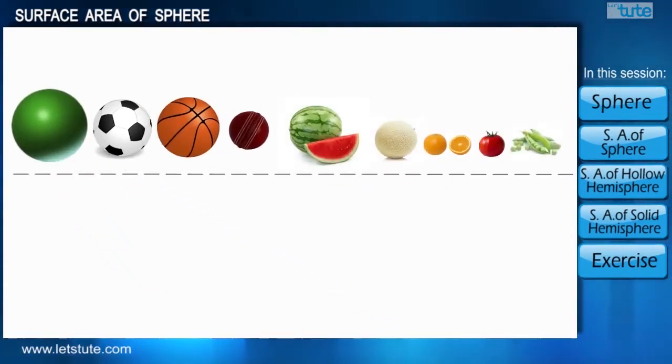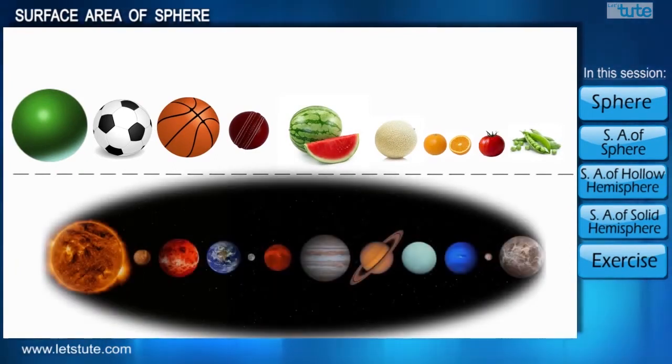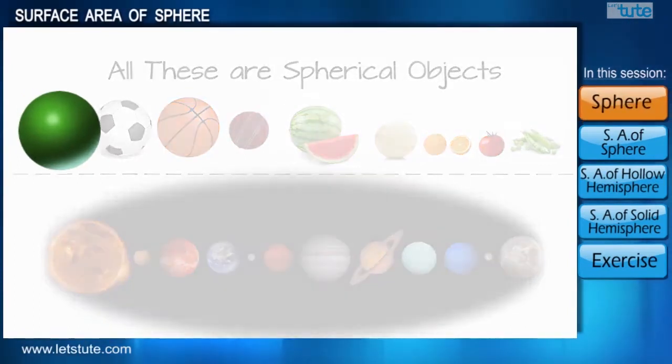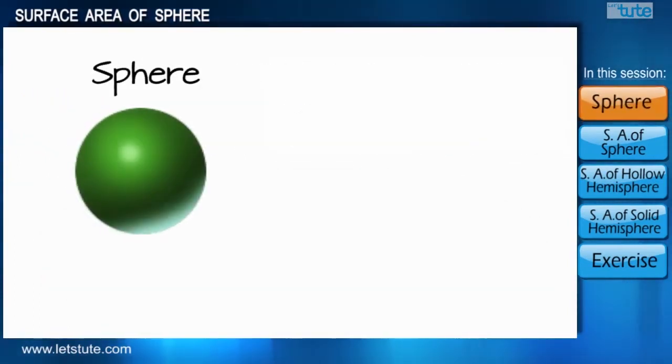We come across many such round shaped objects in our daily life like some fruits and vegetables, as well as the planets of our solar system which are all round in shape. In other words, all these round shaped objects are also called spherical objects.